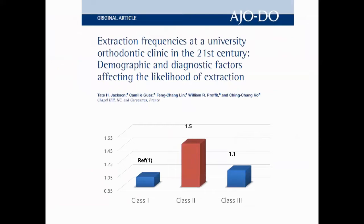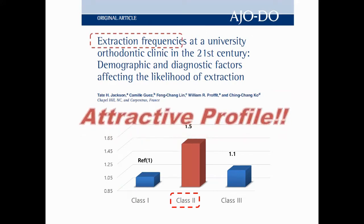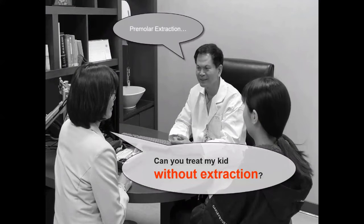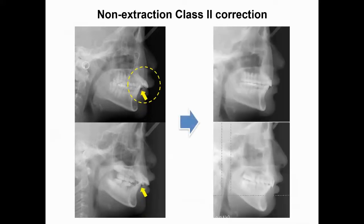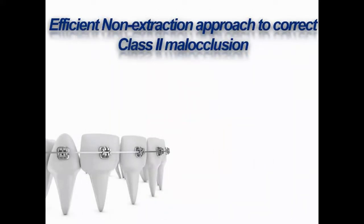According to a recent study, compared to Class 1 and 3, extraction treatment was done mostly in Class 2 patients because extraction could improve the profile dramatically. Nowadays, non-extraction is getting preferred by both patients and parents. These are skeletal Class 2 cases. It can be seen that protrusion and large overjet were improved through non-extraction treatment.